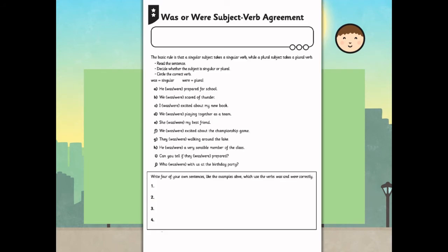Now complete the activity on was or were subject-verb agreement on the worksheets provided. Here you identify whether was or were is the correct verb for the sentence. You will also write four of your own sentences, like the examples above, which use the verbs was and were correctly.